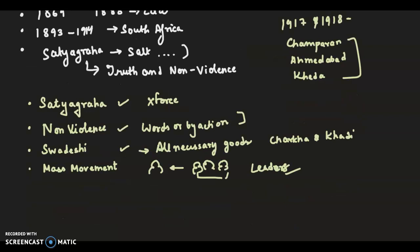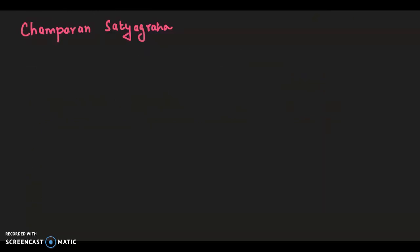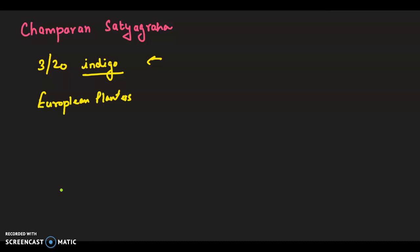In the Champaran Satyagraha, the peasants in Champaran, Bihar were bound by law to grow indigo on 3/20th part of their land and had to sell it at fixed rates, which were extremely low, to European planters. The indigo cultivators invited Gandhi to look into their miseries and take up their cause. The district administration banned his entry into the district. Gandhi offered Satyagraha, due to which an inquiry was ordered into the miseries of the indigo cultivators.